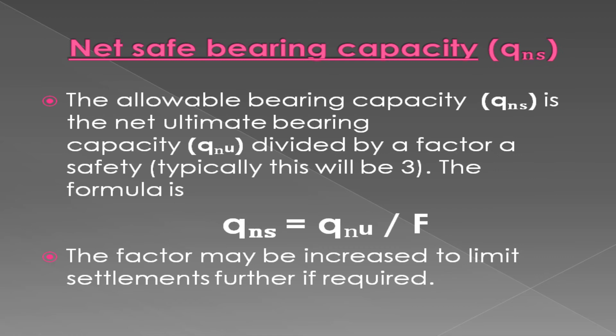Net safe bearing capacity: The allowable bearing capacity is the net ultimate bearing capacity divided by a factor of safety — typically this will be 3. The formula is given below. The factor may be increased to limit settlements further if required.